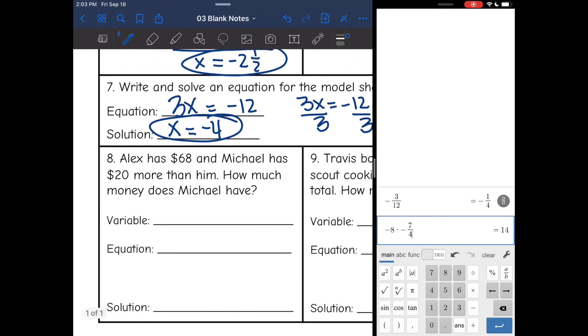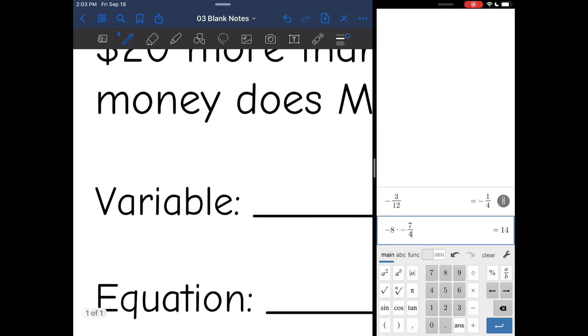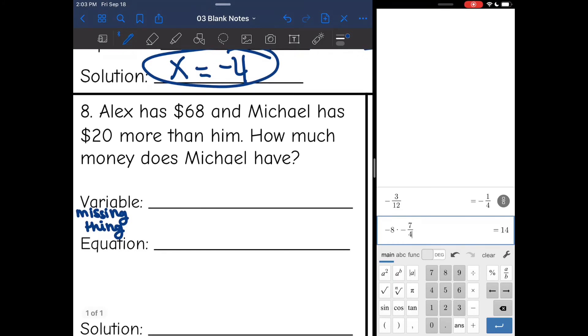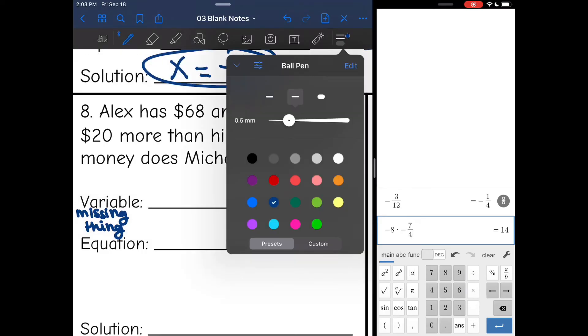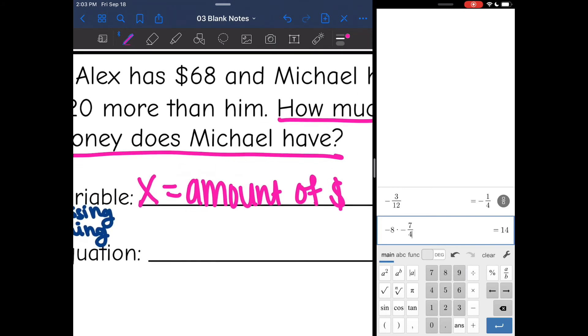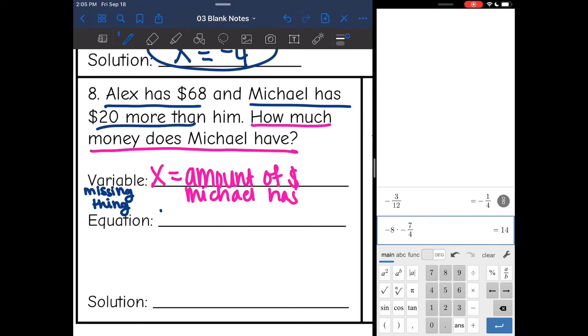Now we're going to move into word problems. In word problems, it's important that you define the variable, the missing thing, so you know how to write the equation. The variable is always going to be what we are looking for. It says Alex has $68 and Michael has $20 more than him. How much money does Michael have? So that is what we are looking for. I'm going to let my variable be x, and that will be the amount of money Michael has. Michael has what Alex has and $20 more. So that means that Michael has $88.